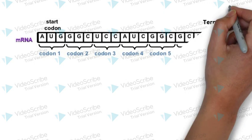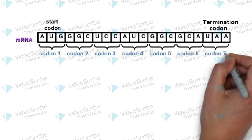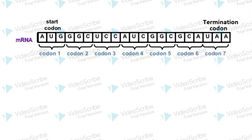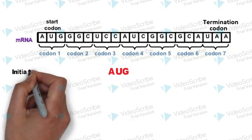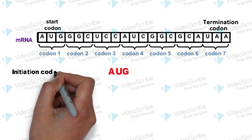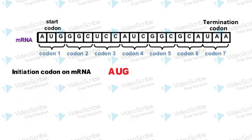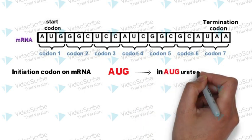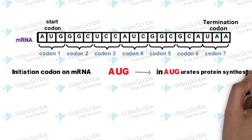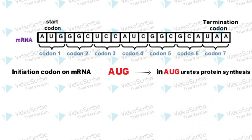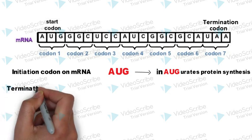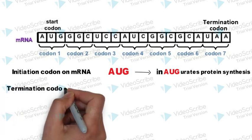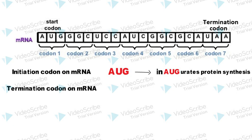Our next mnemonic will help you remember the initiation codon and the termination codons on mRNAs. AUG is the initiation codon — just remember 'AUG inaugurates protein synthesis.' The three termination codons are UAA, UAG, and UGA.